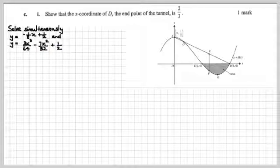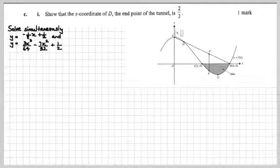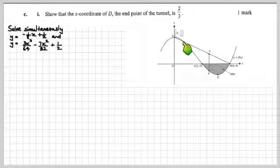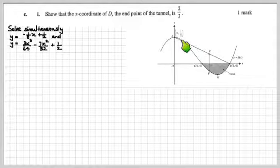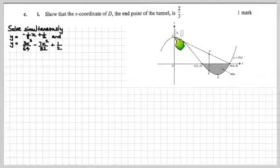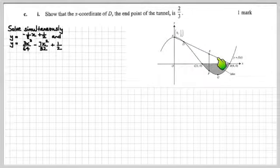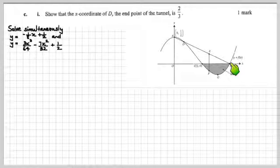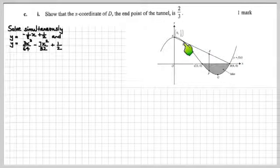Let's keep going. Okay, now what have we got to do? Show that the x-coordinate of D, the end point of the tunnel, is two-thirds. Okay, what are we going to do here? Well, I think that means a simultaneous equation solved, don't you? If we solve simultaneously the straight line equation with this cubic thing, we should get the places where the intersections are. Now, I think we're probably going to get three answers. There'd be A, there'd be D, and there would also be B down here. And we can easily work out which one D is going to be.